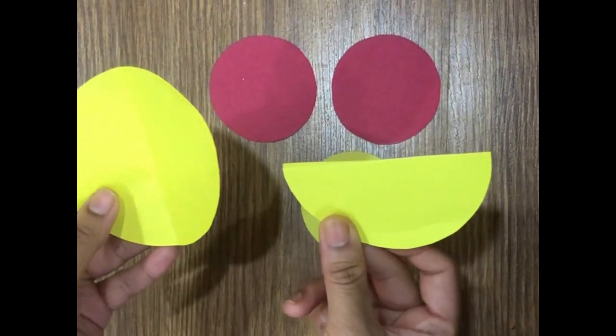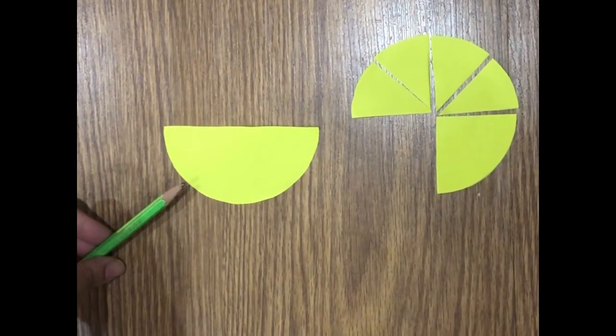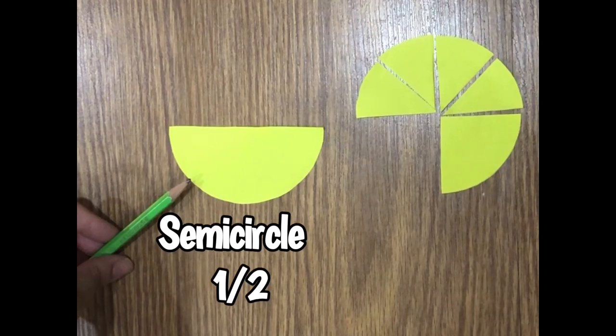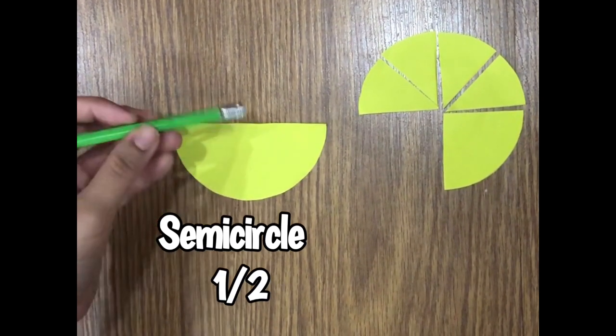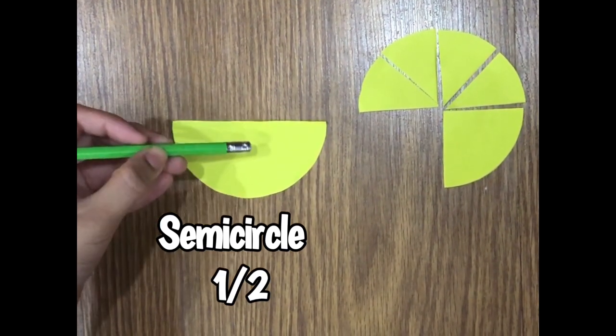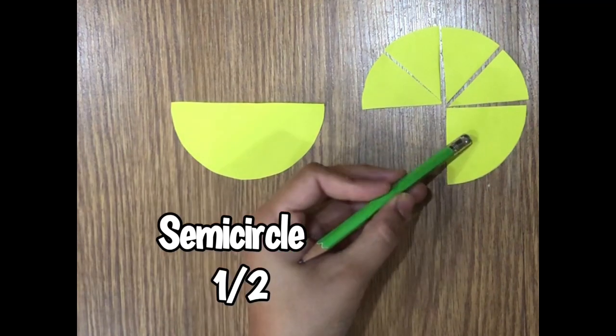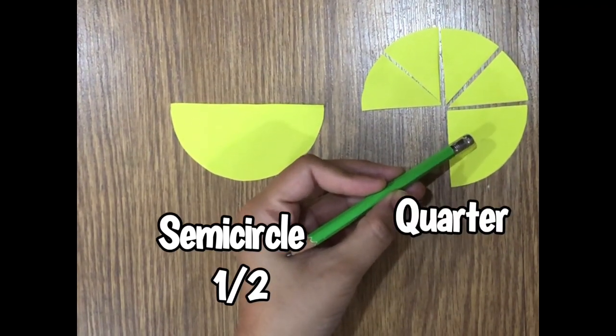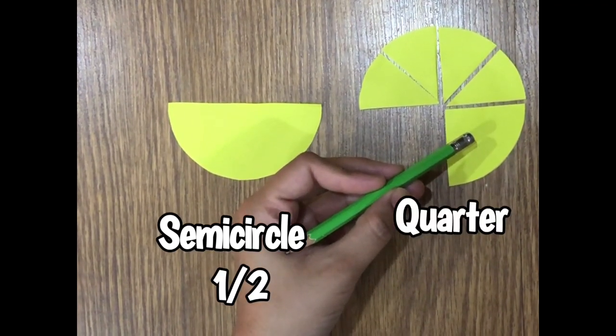Once we cut the circle in half equally, we get a semicircle. When we cut this semicircle vertically and equally, we obtain a quarter of a circle. This is known as a quarter, which is represented as 1/4.